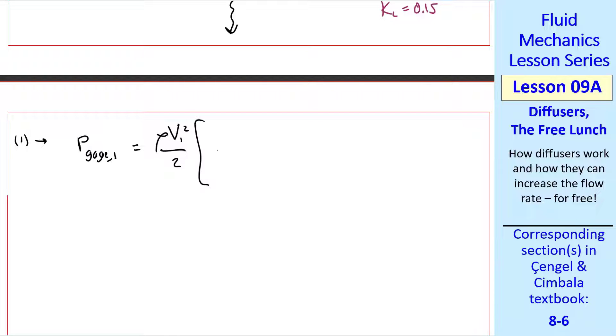Plugging this in and doing a little bit of algebra. Equation one becomes P gauge one equal rho V one squared over two times the quantity alpha two D over D to the fourth minus alpha one plus the KL of our diffuser. This is our answer in variable form.